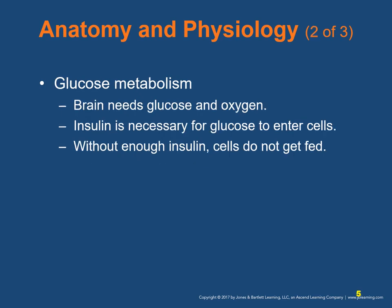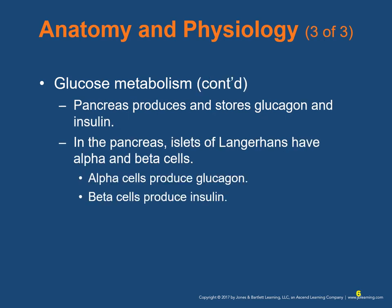Let's talk about glucose metabolism. The brain needs two things to survive: glucose and oxygen. Insulin is necessary for glucose to enter cells; without enough insulin, the cells do not get fed. The pancreas produces and stores two hormones, glucagon and insulin. The islets of Langerhans are found in a small portion of the pancreas, containing alpha and beta cells. Alpha cells produce glucagon and beta cells produce insulin. The pancreas stores and secretes insulin and glucagon in response to the level of glucose in the blood.